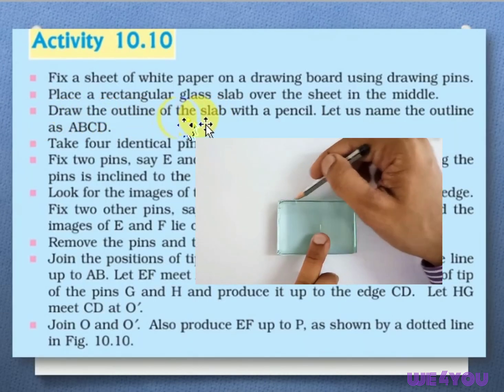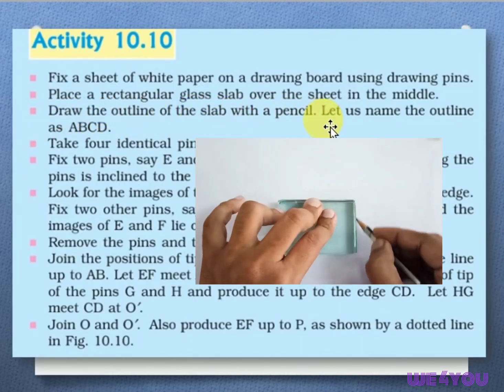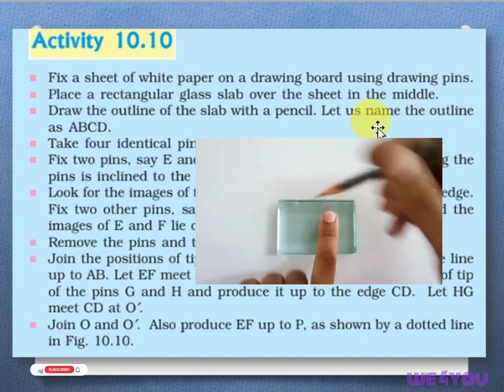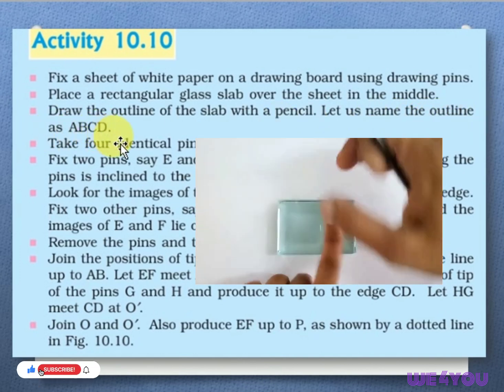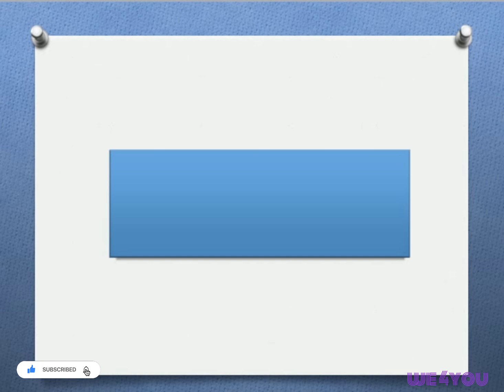Draw the outline of the slab with a pencil. Let us name the outline as ABCD. We have to make a pencil outline around the glass slab and name it as ABCD.